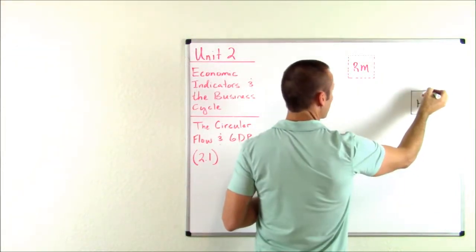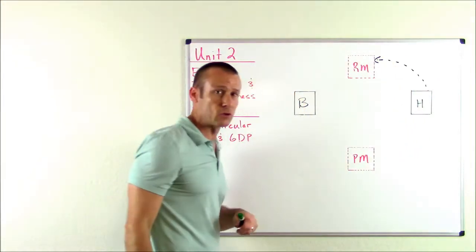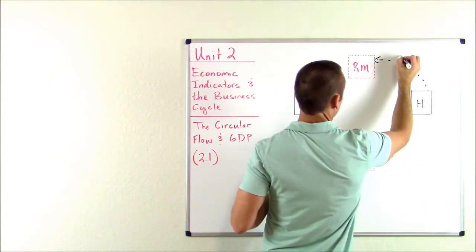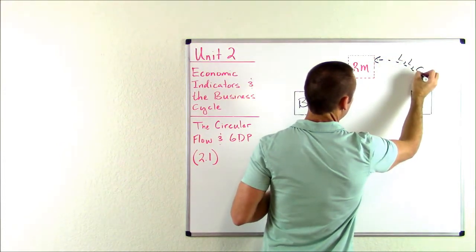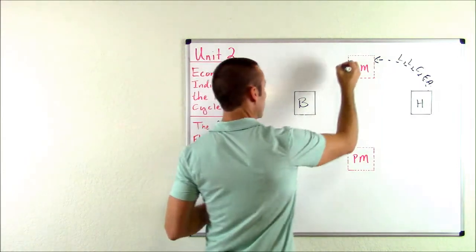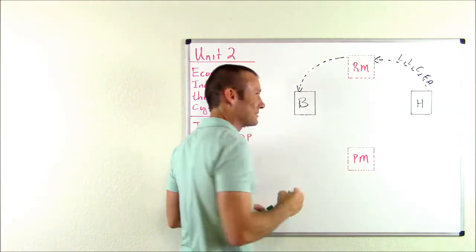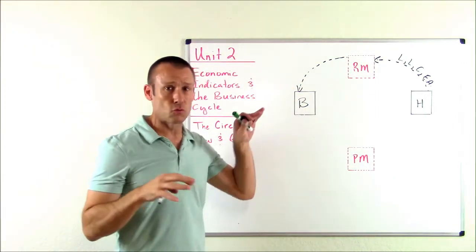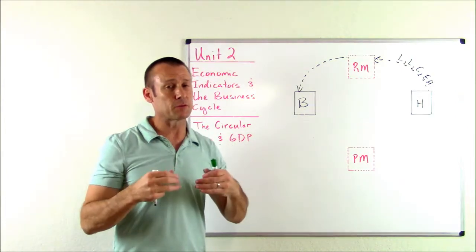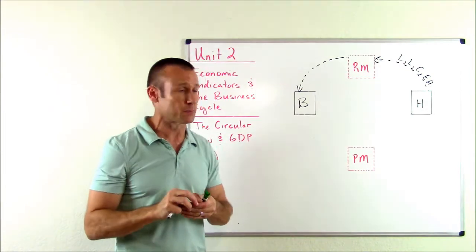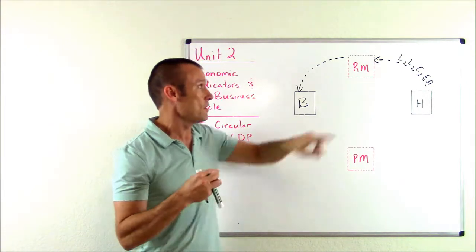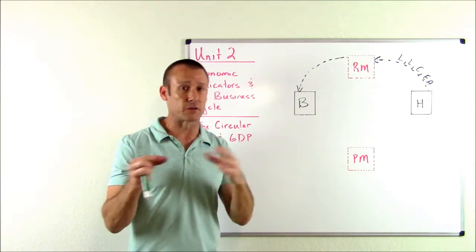I'm going to show you the tangible things that are flowing. From households, we have resources flowing to the resource market — households are supplying resources to the resource market: land, labor, capital, and entrepreneurial ability. Businesses are demanding those resources, so those resources flow into businesses. Businesses need those resources to produce goods and services. You might hear of the four factors of production — land, labor, capital, and entrepreneurial ability — they're the same thing. Resource market and factor market are one and the same; either one works.